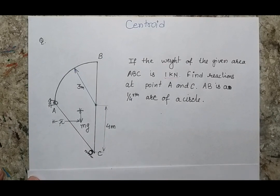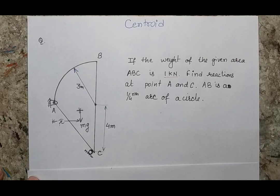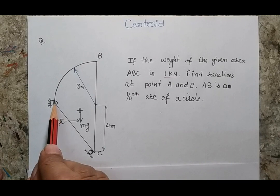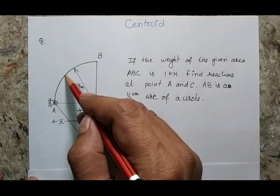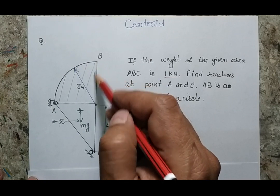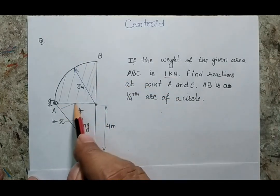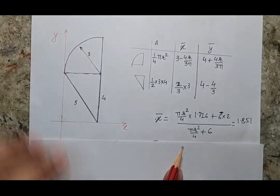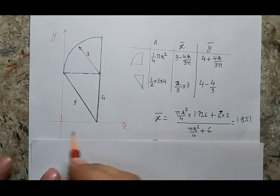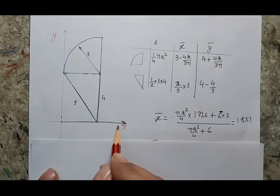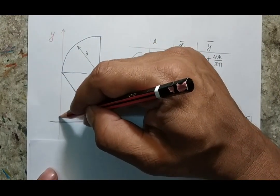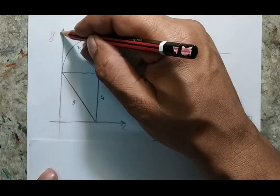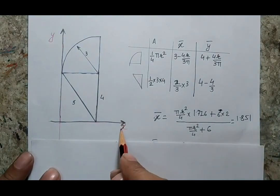So my first job would be to find the centroid, and for that I have to mark the different sections. Looking at the problem carefully, I can identify two different sections: one is this quarter circle arc, and the second one is this right angle triangle. Once I make these two sections, I will set up the reference axes — I consider the extreme left and the extreme bottom as my reference axes.